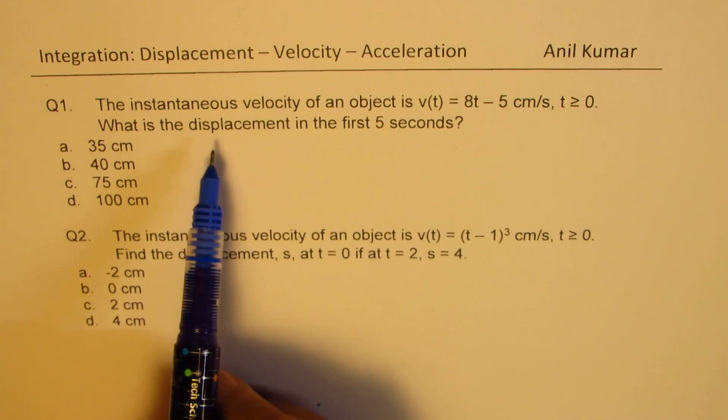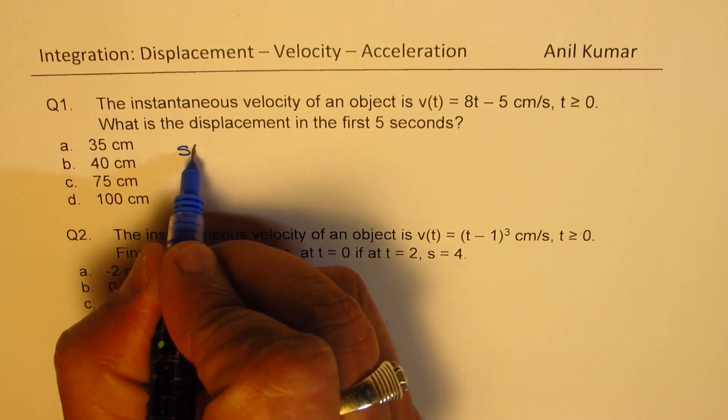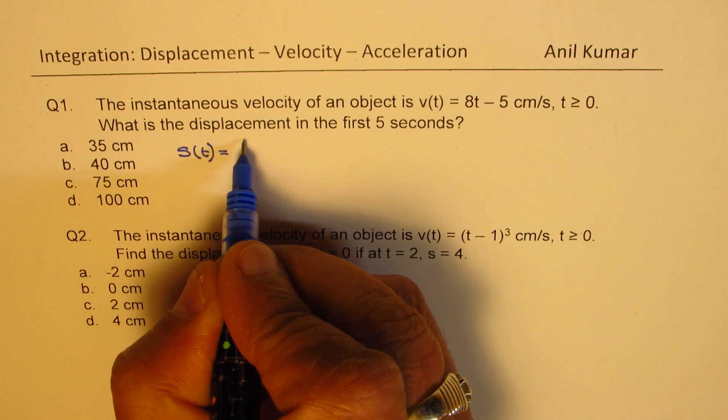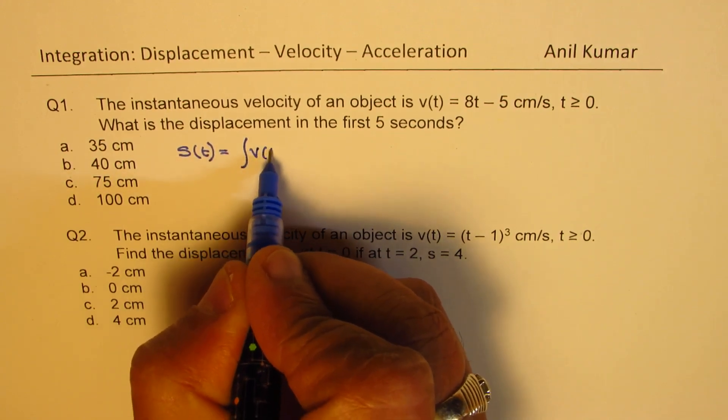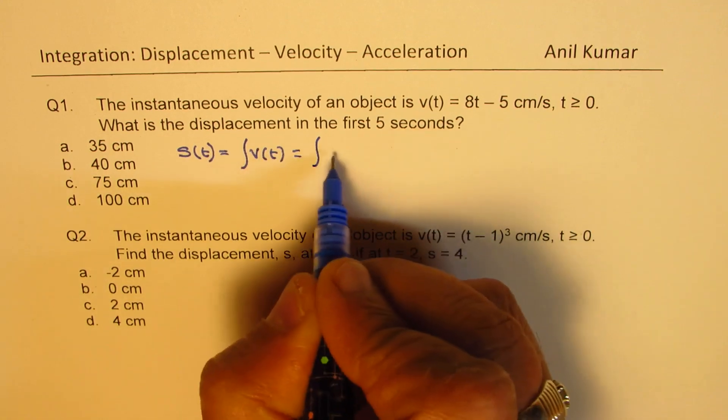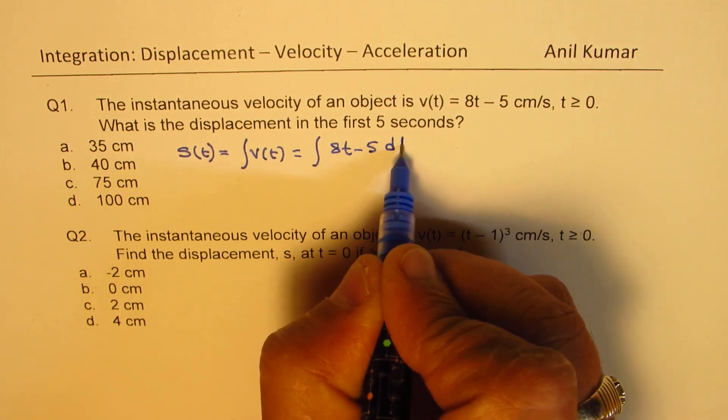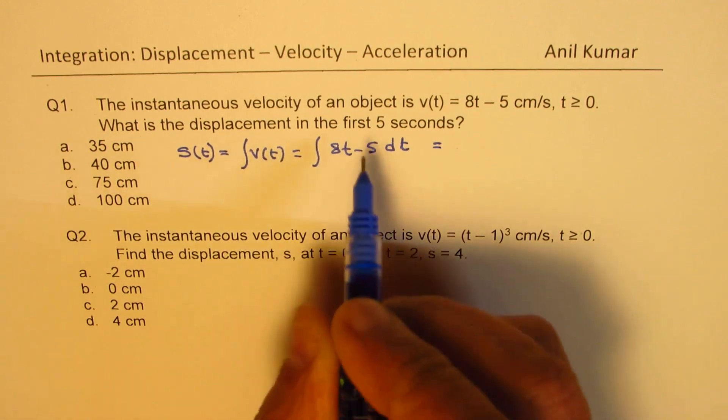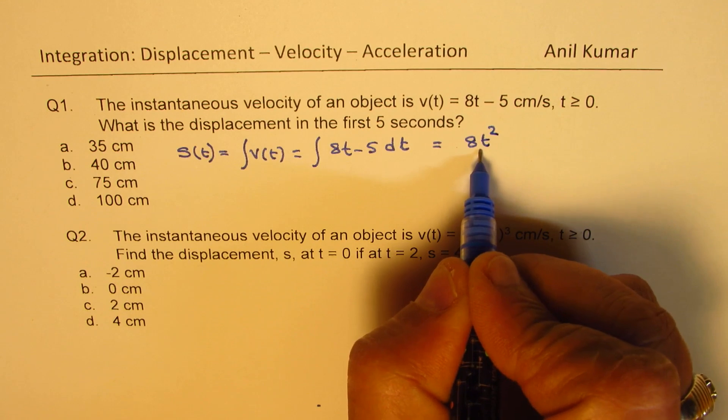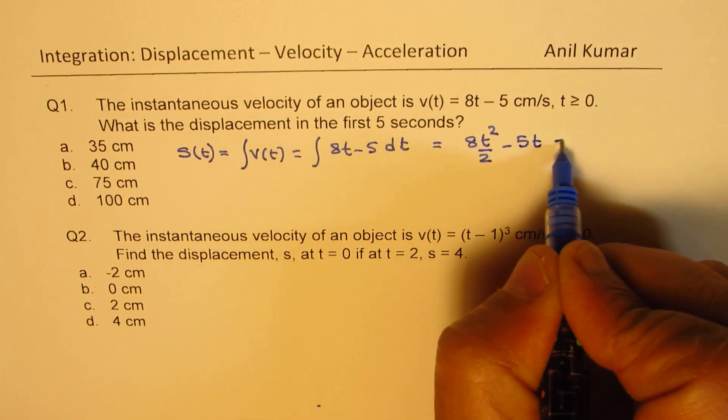So to begin with, we are interested in finding displacement. So displacement s(t) is integral of the velocity. We are given the velocity function. So let's integrate it. It is 8t minus 5 dt and the integral of this will be 8t squared over 2 minus 5t plus a constant c.